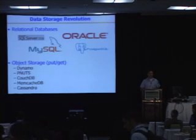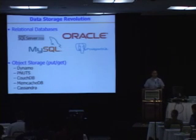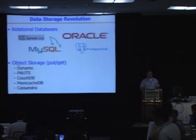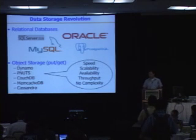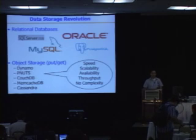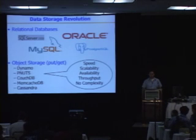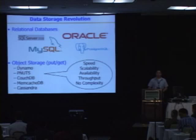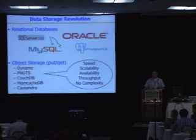Object storage systems have a very simple put-and-get interface. You have an identifier that identifies a value, and you can query your system and get the value associated with that identifier. Some examples are Amazon's Dynamo, Yahoo's Peanuts, and others. The reasons companies use these are speed, scalability, availability, and throughput — the main properties that are the focus of very interactive applications such as websites. Also, they don't really need the complexity of relational databases; many very interactive websites could count the number of complex joins they do on one hand.